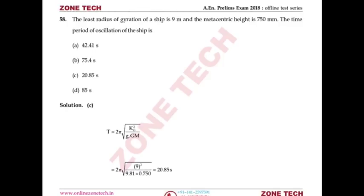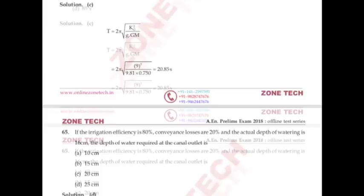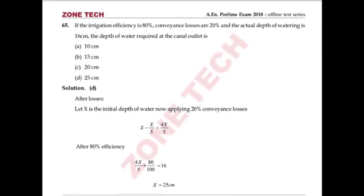Question number 58: A ship has least radius of gyration 9 m and metacentric height 750 mm. Find time period of oscillation. Formula: T = 2π√(k²/g·GM), where k = radius of gyration and GM = metacentric height in meters. Substituting values: T = 20.85 seconds. Answer is C.